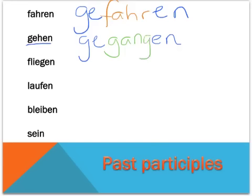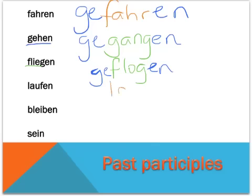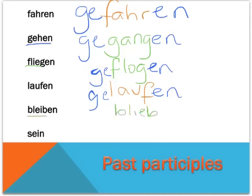With fliegen, the regular stem would be flieg, but it is an irregular stem — it becomes flog. So we add our GE to the start and our EN to the end: geflogen. Laufen, to run, actually has a regular stem: lauf. And as per the pattern, a GE at the beginning and an EN at the end: gelaufen. Bleiben is our first example of a verb that is not a verb of motion, and it also has an irregular stem, changing from bleib to blieb. Still, with the GE and the EN at the end: geblieben.